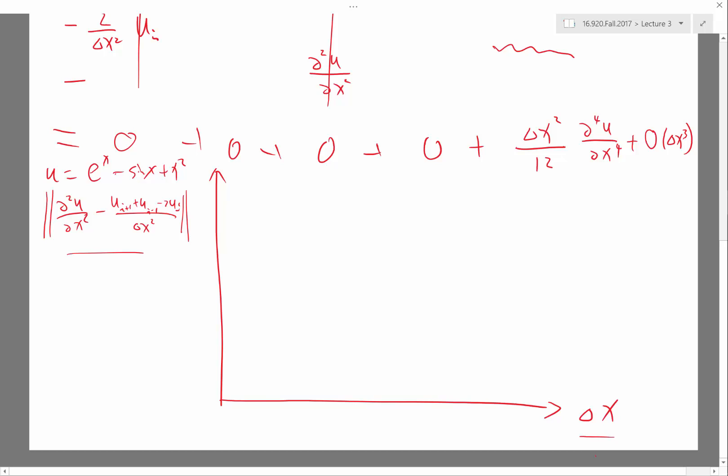So you plot the error against your delta x, not in a linear plot, but in a double logarithmic plot. You plot in a double logarithmic plot, so each line corresponds to a factor of 10. So you're going to get a line, a logarithmic plot looks like that.